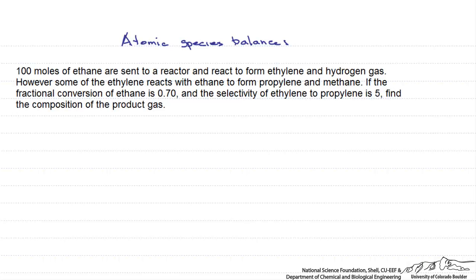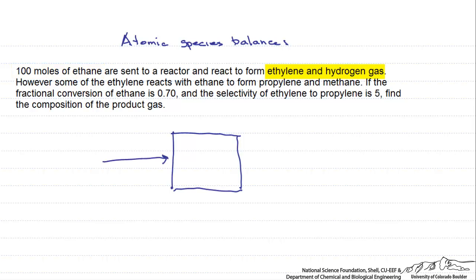In this screencast we are going to use the atomic species balances method to solve for a reaction. So we have 100 moles of ethane sent to a reactor and they react to form ethylene and hydrogen gas.